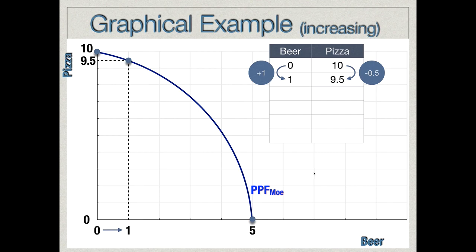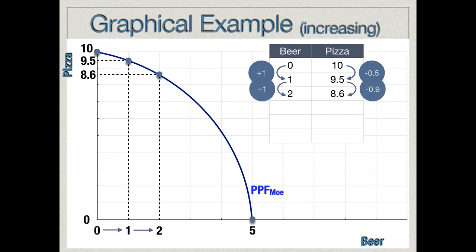Going further, if Mo wants to increase beer production from one beer to two beers, we follow that up to the production possibilities frontier and across — that yields 8.6 pizzas. We increased beer production by one unit, but now the opportunity cost of producing that second beer is equal to 0.9 pizzas. So the opportunity cost has increased from 0.5 pizzas to 0.9 pizzas as we go from zero to one beer and then from one to two beers.